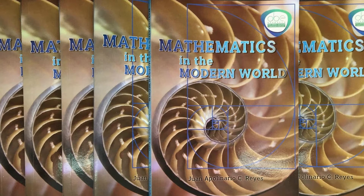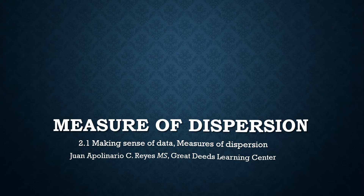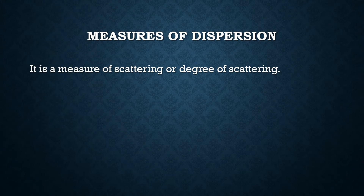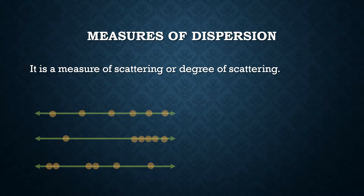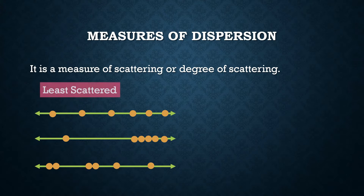We shall begin a new topic under making sense of data — this is about measures of dispersion. A measure of dispersion is also called the measure of scattering or degree of scattering of elements in a data set. Suppose we are given three sets of data and we line the elements on a real number line. Let us describe each data set: which is the least scattered, which is more scattered, and which is most scattered?